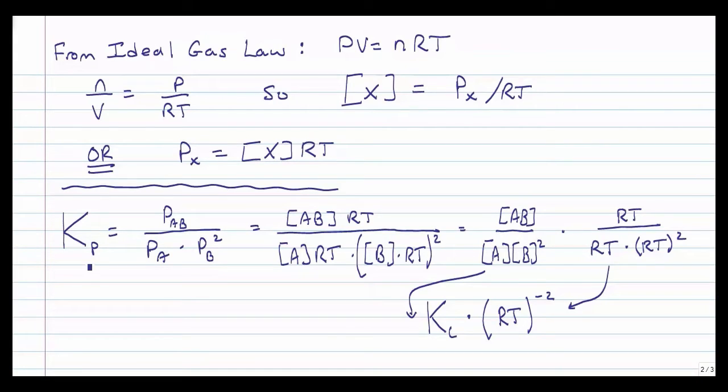If we take our K sub P from our previous example, we can see that it's P of AB2 divided by PA times PB squared. Let's substitute in for every pressure. For P sub AB2, we'll substitute in the concentration of AB2 times RT. Same thing for P sub A, concentration of A times RT. And we have to remember that for B, both of these things, the whole term, the concentration of B times RT gets squared.